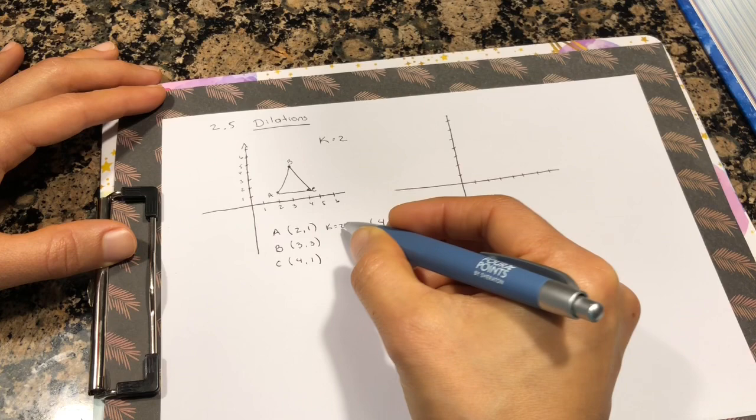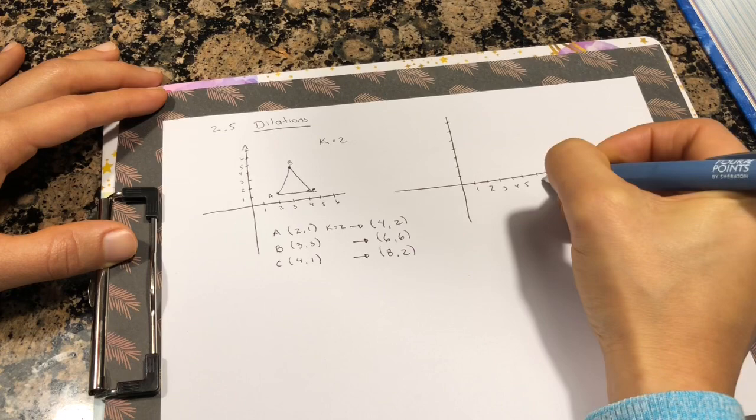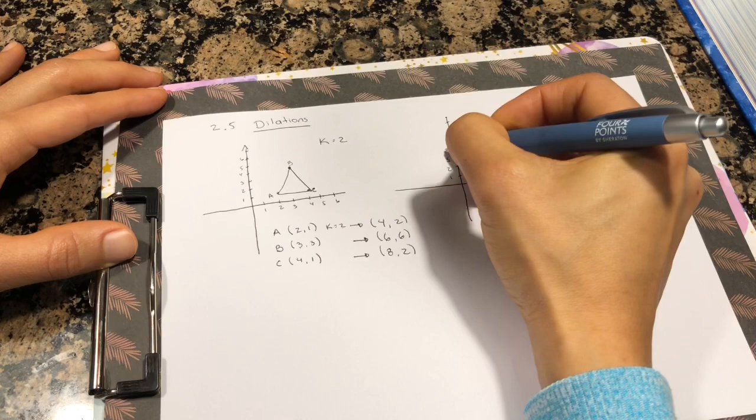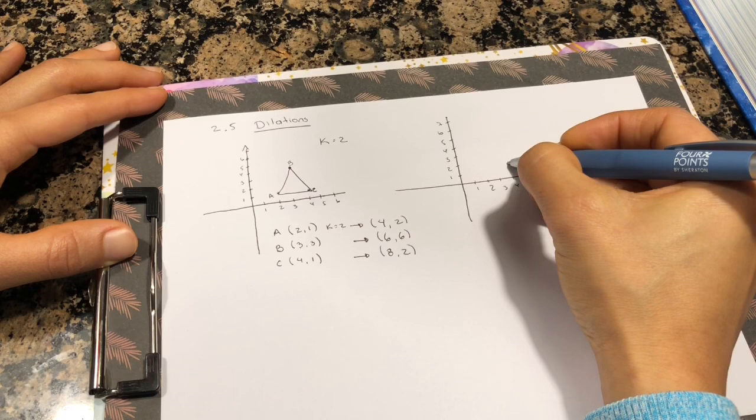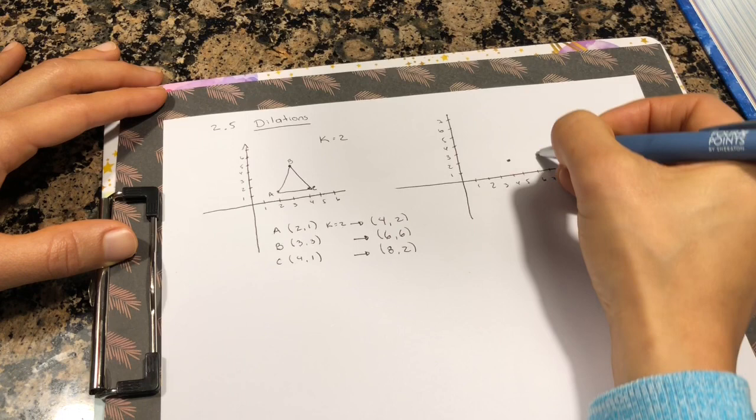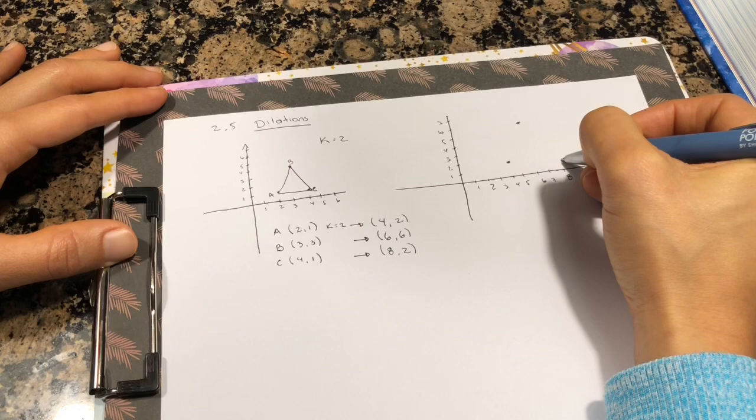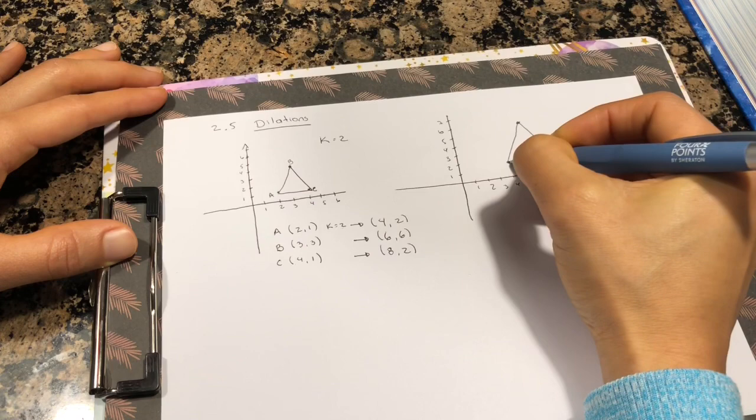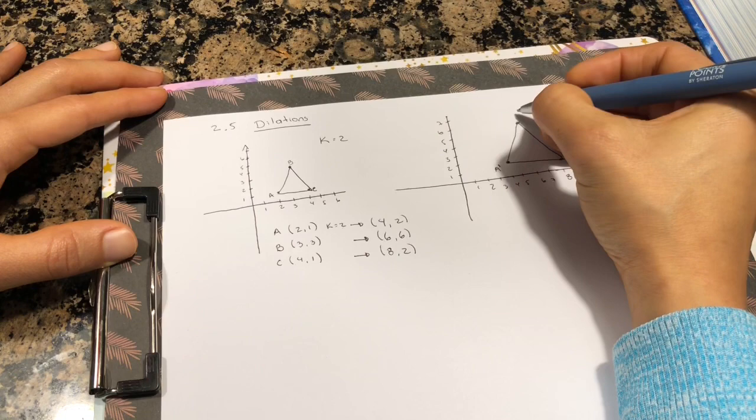So 4 and 2, here will be my first one. And then 6 and 6, point B, around here. And then 8 and 2, it will be here. This is my new triangle. And these are the points. I'm going to put this because it's dilated, right? It has suffered a transformation.